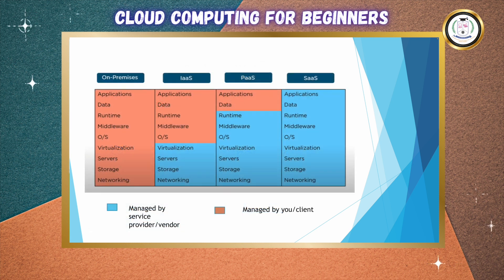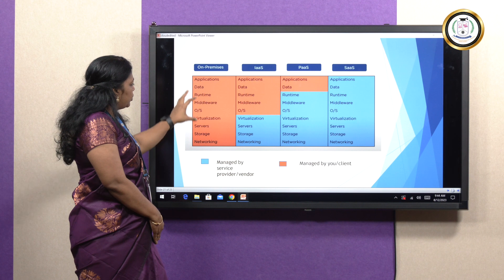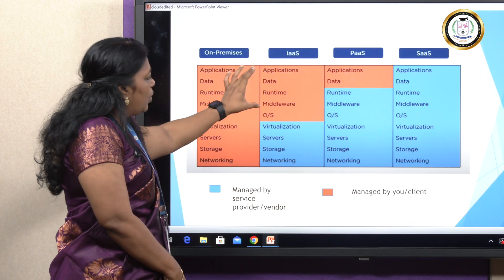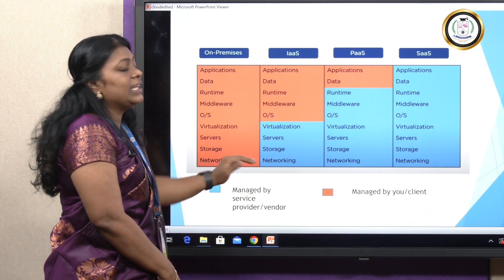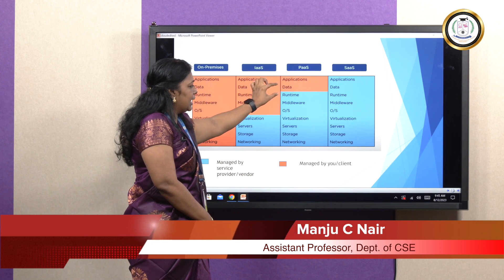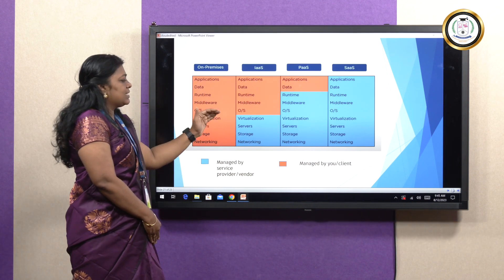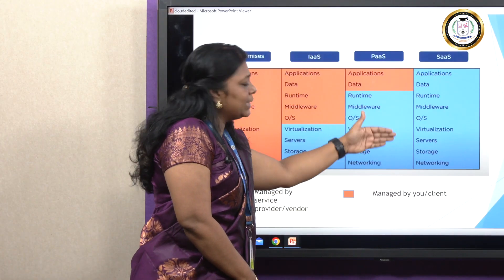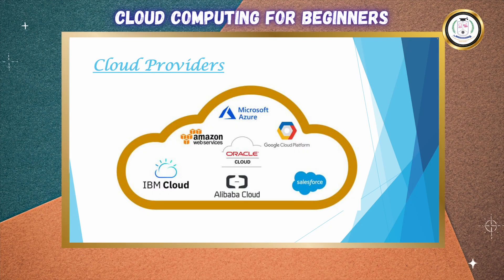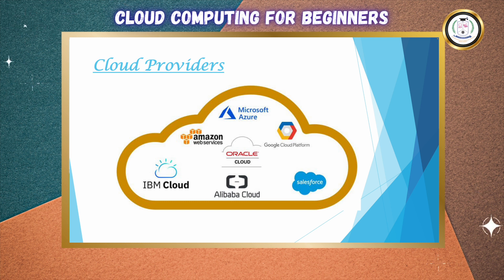In on-premises, all things have to be provided by the client. In IaaS, applications, data, and runtime are provided by you; storage and everything else is provided by the cloud provider. In Platform as a Service, only you provide applications and data; the cloud provider provides middleware, storage, and everything else. In SaaS, all things are provided by the service provider or vendor. The main cloud providers available in the market are Microsoft Azure, Amazon Web Services, IBM Cloud, Alibaba Cloud, Oracle, Salesforce, and Google Cloud Platform.